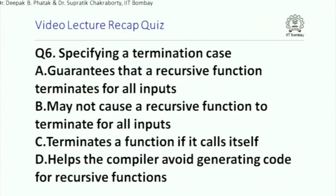Specifying a termination case: A: guarantees that a recursive function terminates for all inputs; B: may not cause a recursive function to terminate for all inputs; C: terminates a function if it calls itself; D: helps the compiler avoid generating code for recursive functions.